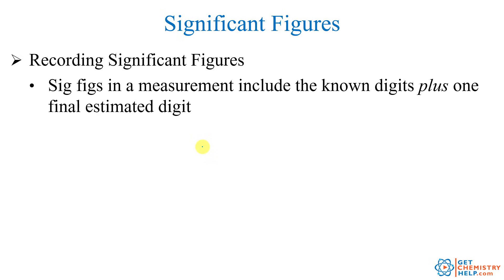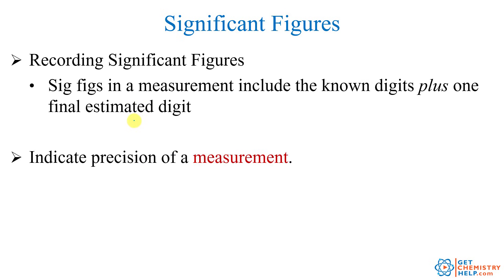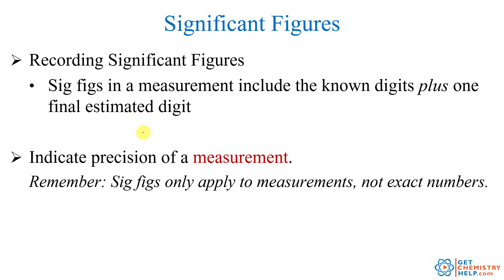If a number has more significant digits, that means it's more precise and has less error. When you're making a measurement, you want to record all of the known digits — all the ones clearly marked on the device, on the thermometer, on the ruler, on the graduated cylinder — plus one final estimated digit. You only estimate one more digit beyond whatever is clearly marked. This indicates the precision of a measurement. Remember, sig figs only apply to measurements, not to exact numbers. If something has been defined to be true, like one foot equals 12 inches, that is exactly 12 — it is infinitely precise, with no error whatsoever.